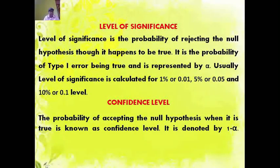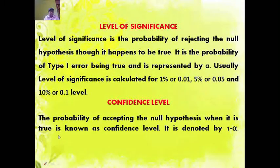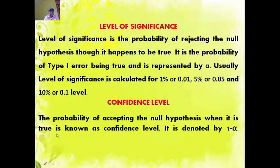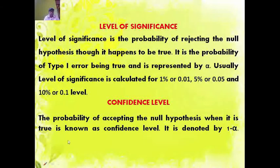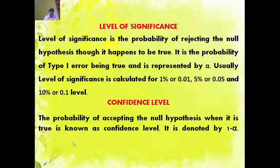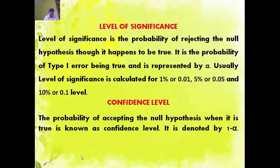Level of significance: when the null hypothesis is true, it is the probability of rejecting the null hypothesis. It is the type 1 error, or alpha. It is the opposite of confidence level.